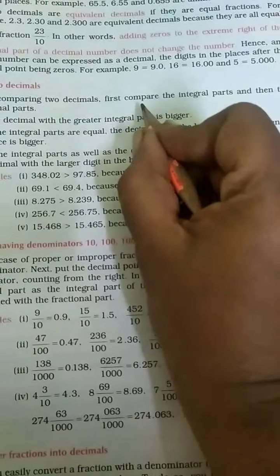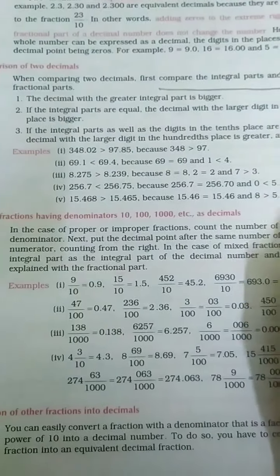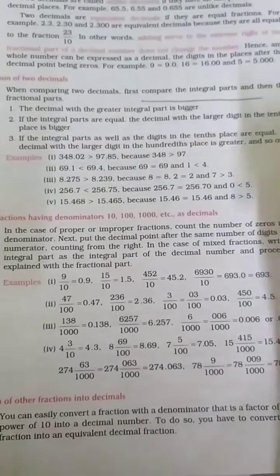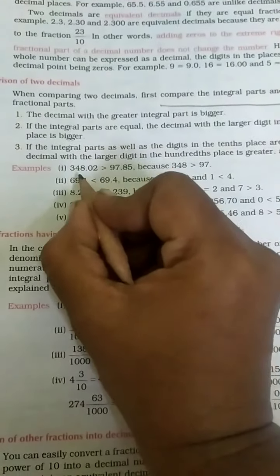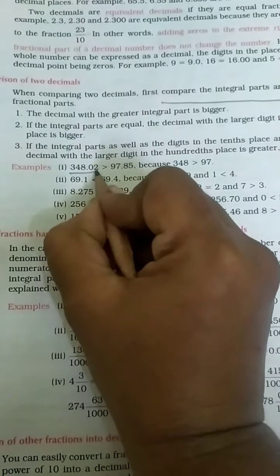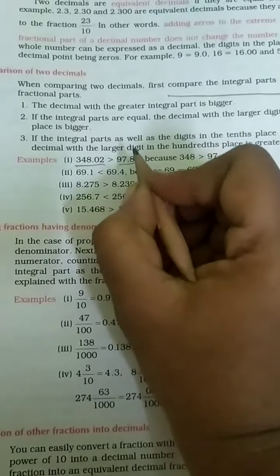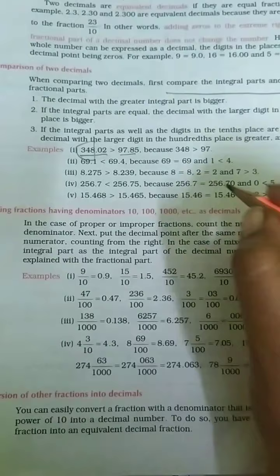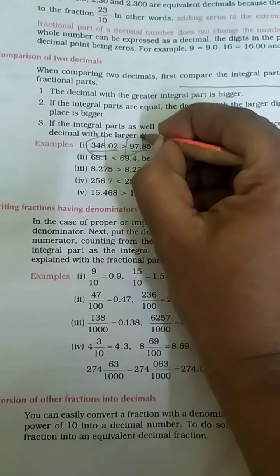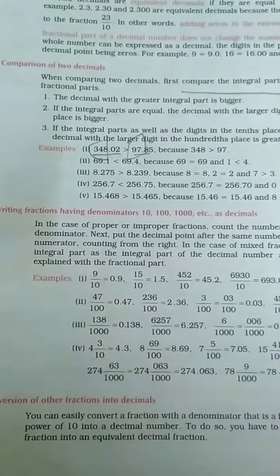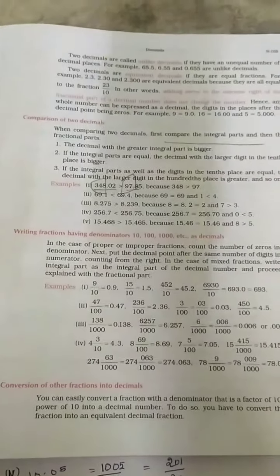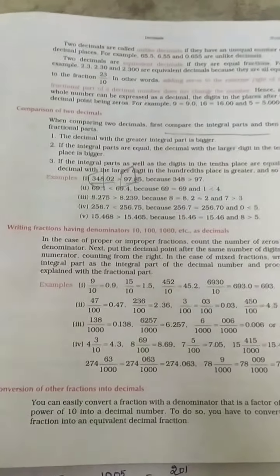First you are going to compare the integral part, then you have to compare the fractional part. See if you look at these two numbers — integral part means the number before the decimal. Here we have 348 and 97. These are the numbers you call the integral part.